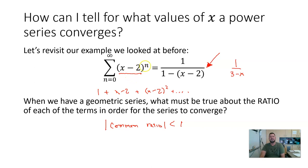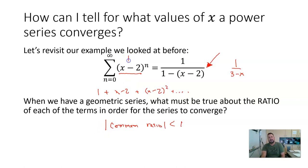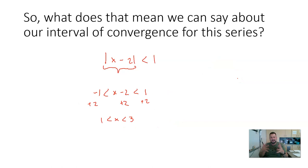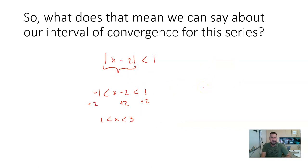This means the function 1 over (1 minus (x minus 2)), which simplifies to 1 over (3 minus x), and the infinite series (x minus 2) to the nth power will give the same answer for any x between 1 and 3, because it gives a convergent result. Outside that interval, we're no longer in our interval of convergence, which means we have a divergent series — it would go to infinity and we couldn't find out what it adds up to.